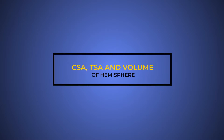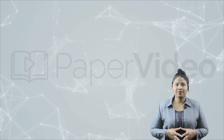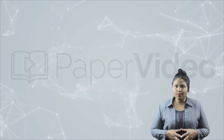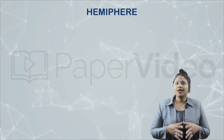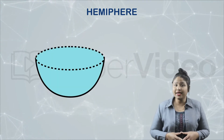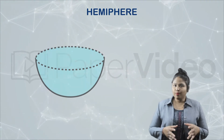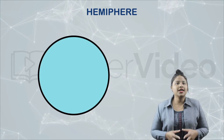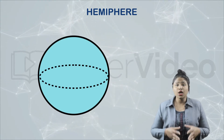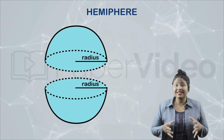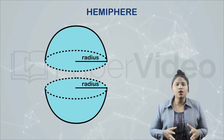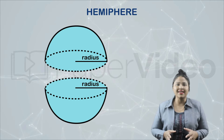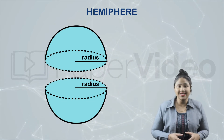Curved surface area, total surface area and volume of a hemisphere. In this video we will learn about three important formulas related to the hemisphere. A hemisphere is a three dimensional shape like this. Basically, if we cut a sphere right in the middle we will get two hemispheres. Just like a sphere, a hemisphere is also defined by only one thing and that is its radius.